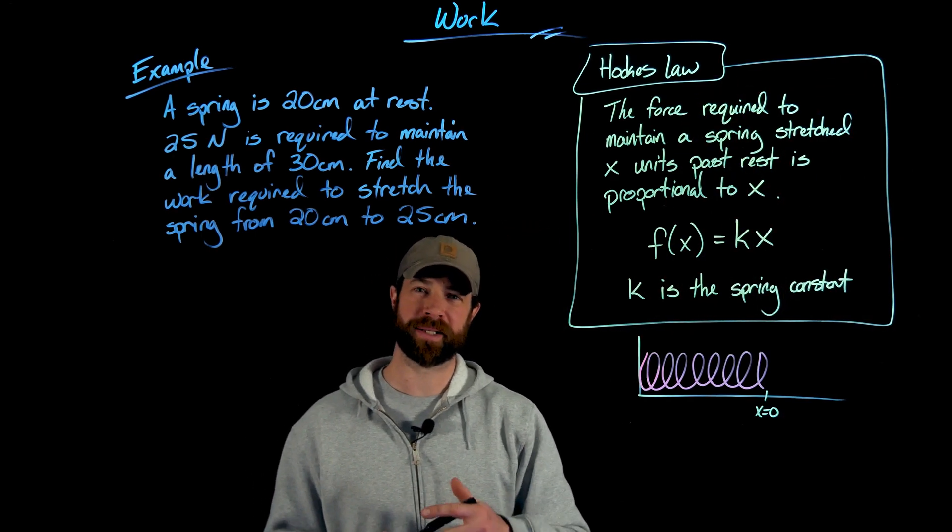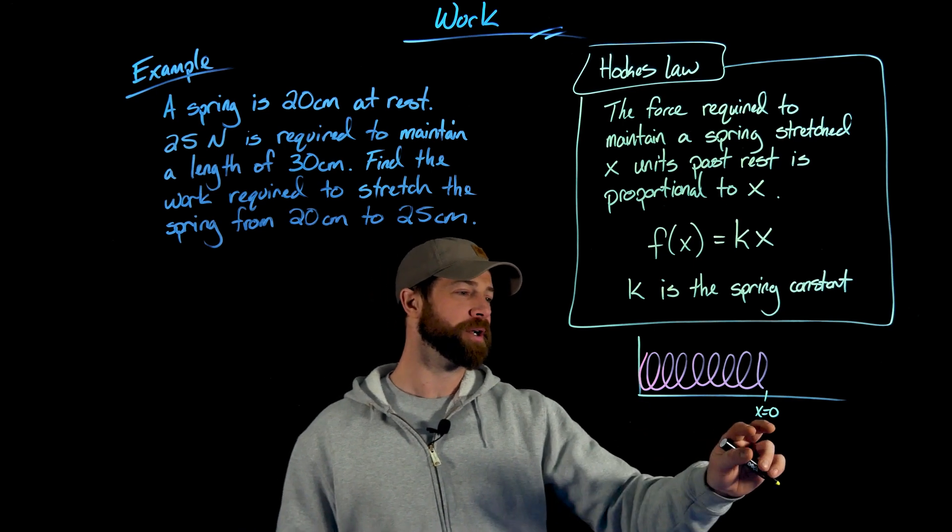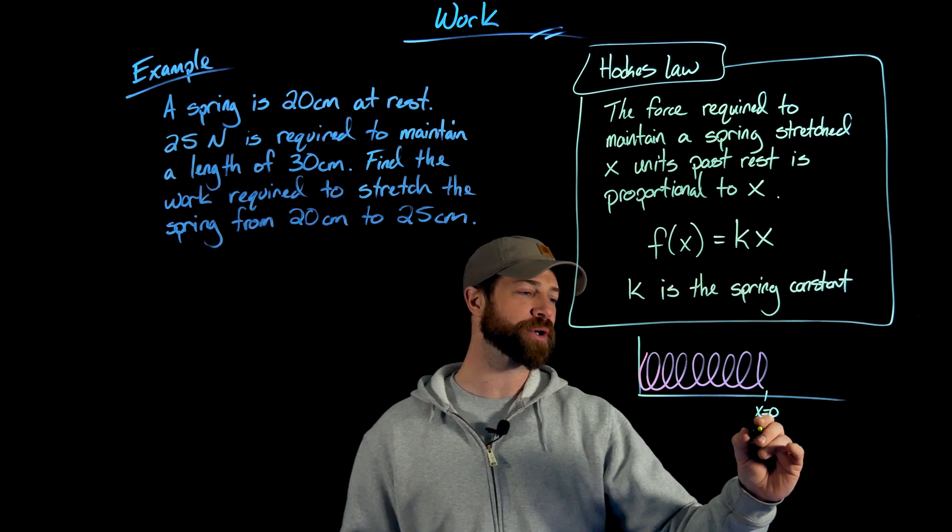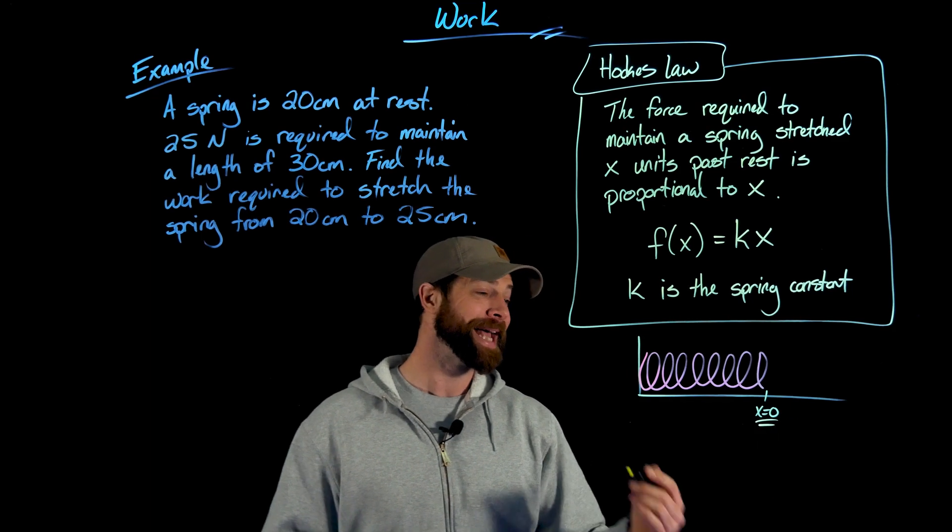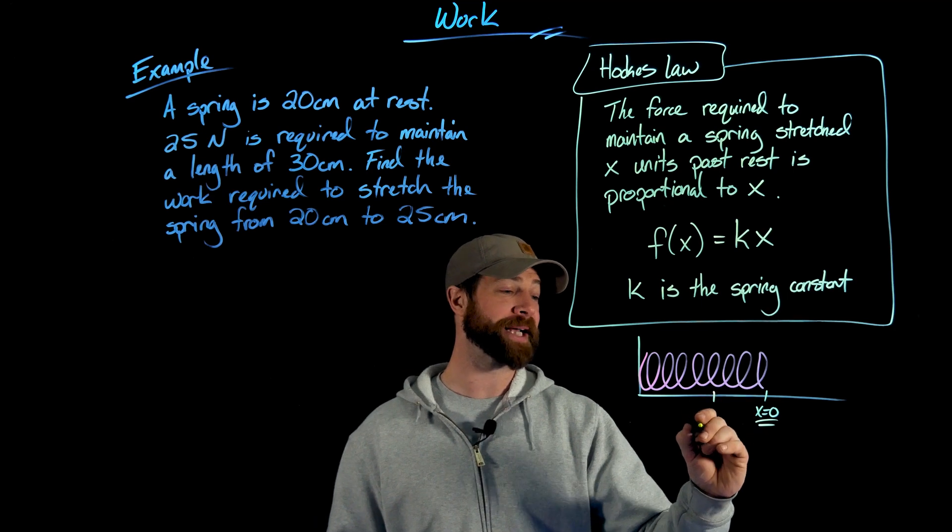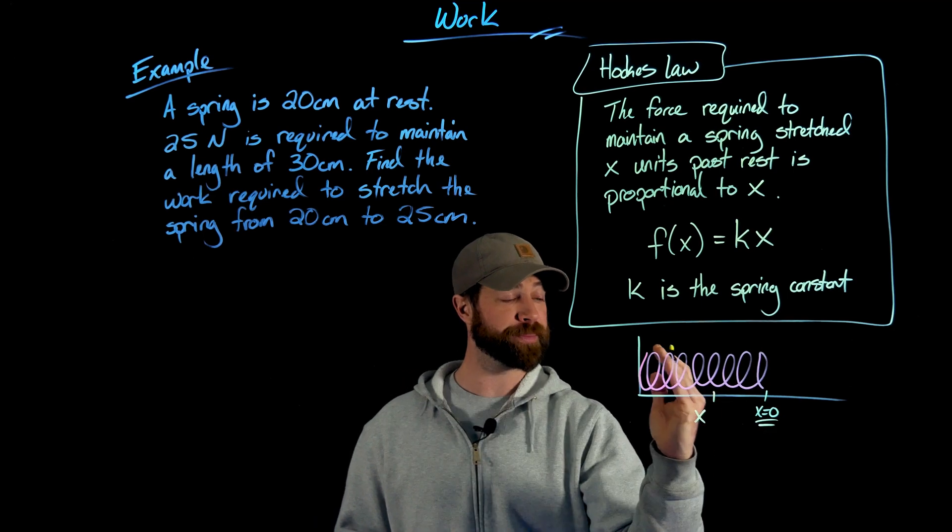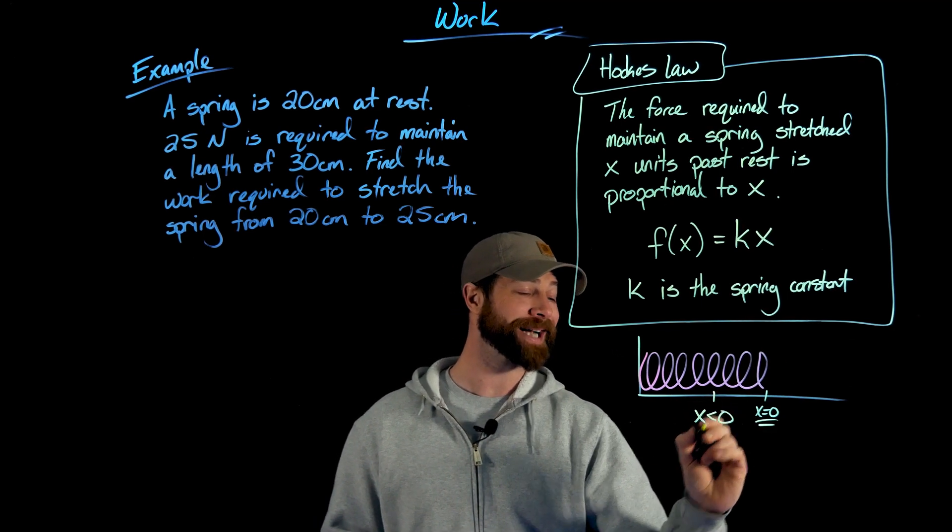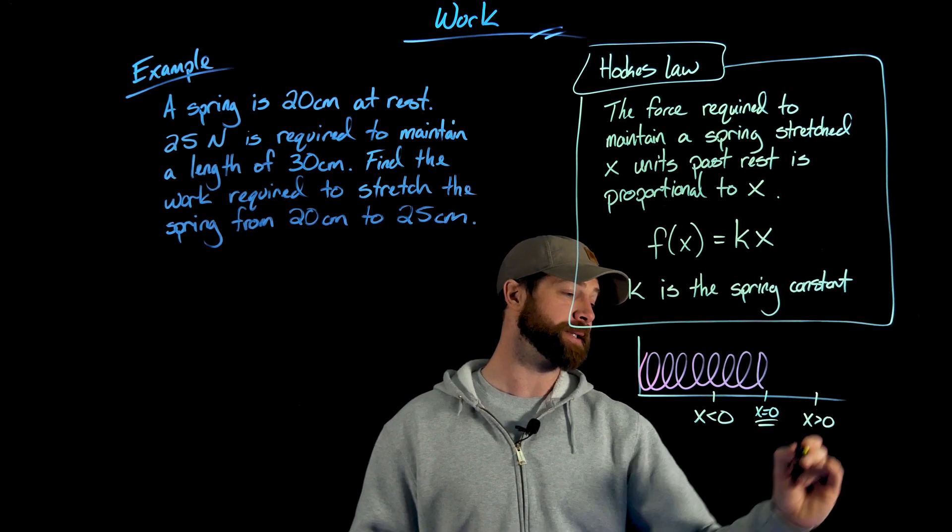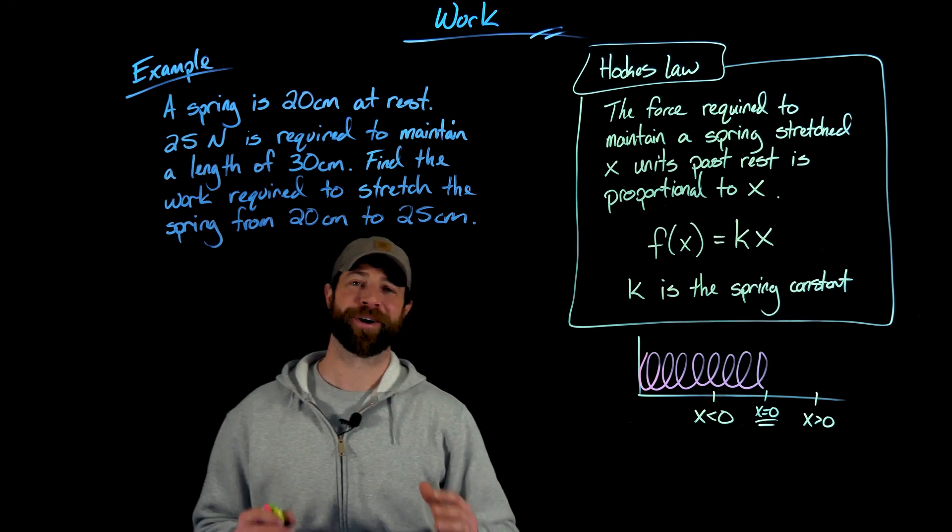So that's really important. k is the distance from what we call the equilibrium. But I also want to say this k, we call this the spring constant. And the point with the spring constant is every spring that you make has a constant k value. So x equaling zero means the spring is at rest. We also call this the equilibrium. If your x value is negative, we would be compressing this. So if you compress the spring and push it in, those are x values less than zero. And then stretching it would be x values greater than zero.